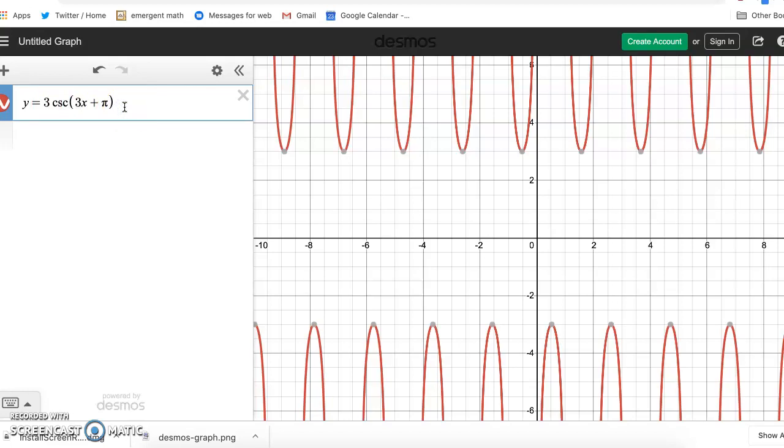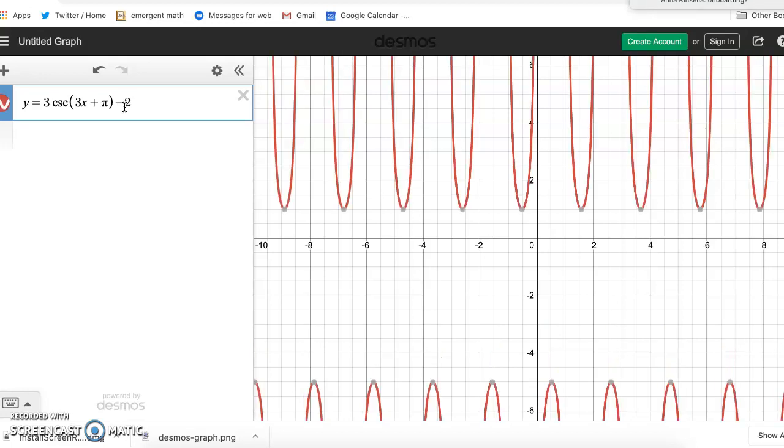The last thing we have to think about is this minus two at the end. So what that's gonna do, I'll just put it in here, minus two, is that just shifts everything down two slots. So that's how we end up with this gap of one to negative five.